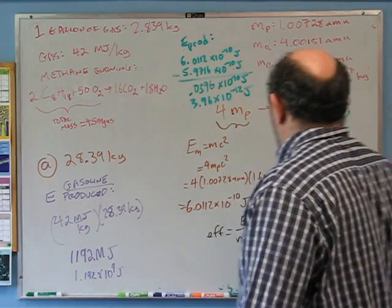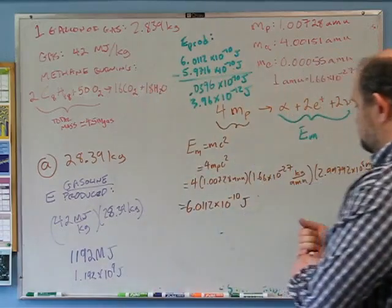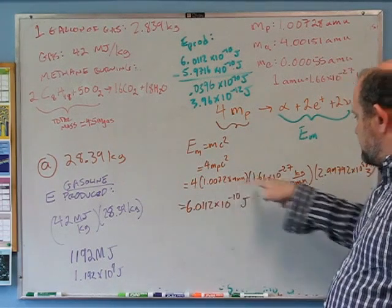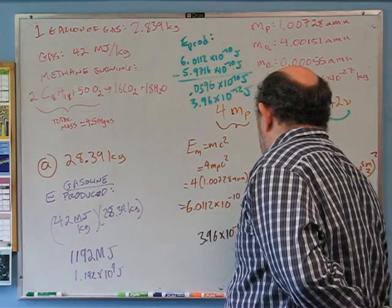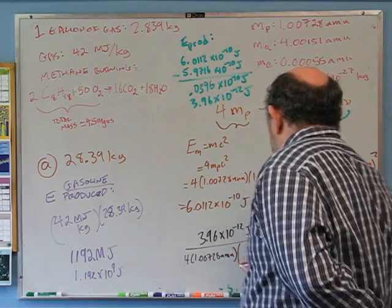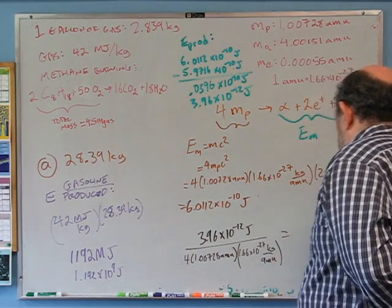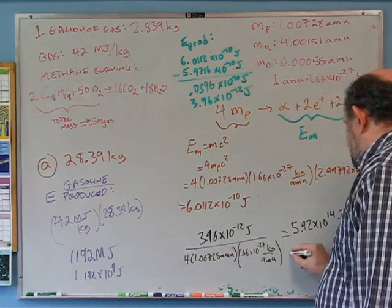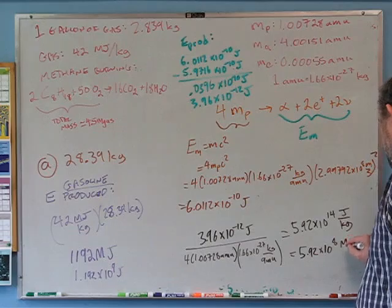What we really care about is the energy per kilogram — analogous to the 42 MJ/kg for gasoline. We know that 4×1 amu of hydrogen produces 3.96×10⁻¹² joules. So: 3.96×10⁻¹² J ÷ (4 × 1.00728 amu × 1.66×10⁻²⁷ kg/amu) = 5.92×10¹⁴ J/kg, or 5.92×10⁸ MJ/kg. Hydrogen fusion is way more efficient: 42 MJ/kg versus 5.92×10⁸ MJ/kg.